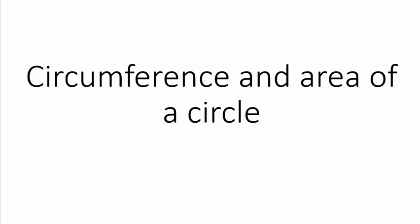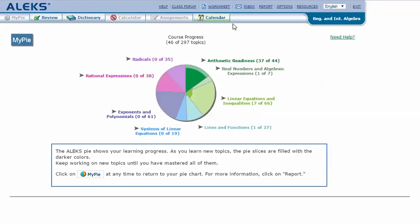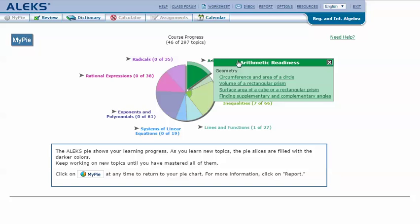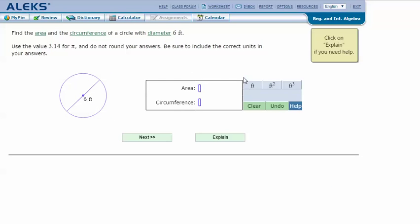Circumference and area of a circle in your ALEKS. Pie mouse over the green slice arithmetic readiness to reveal the drop-down list of topics you need to cover. Click on circumference and area of a circle. Here's an example problem.